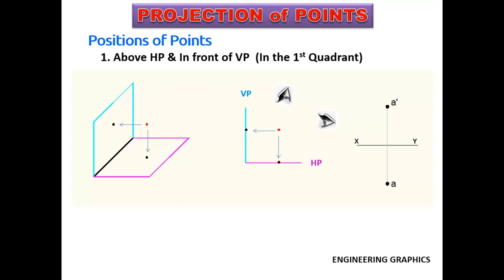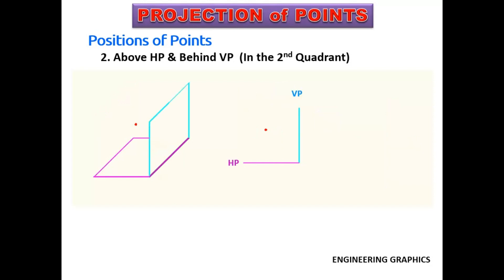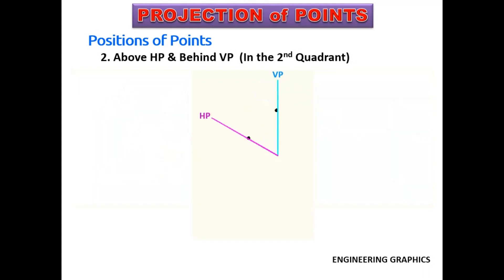The second case is when the point is above HP and behind VP — that is, the point is in the second quadrant. The elevation of the point falls on VP, and the plan of the point falls on HP. The horizontal plane is turned 90 degrees in the clockwise direction, and both the elevation and plan are above the intersection line of planes. Elevation is A-dash and plan is A.